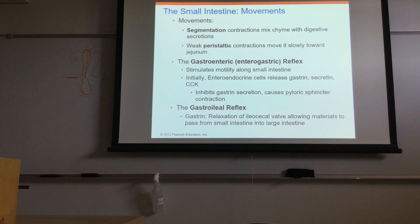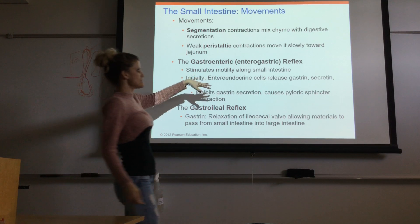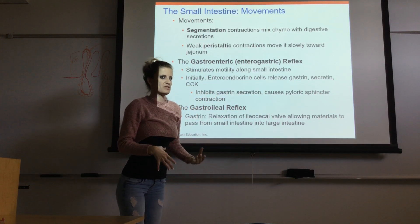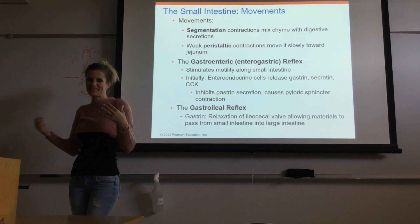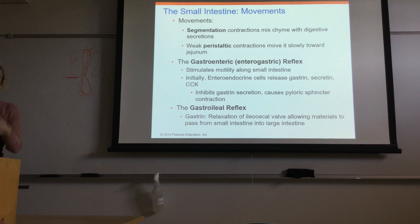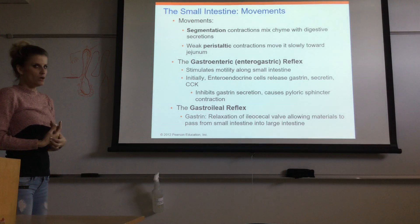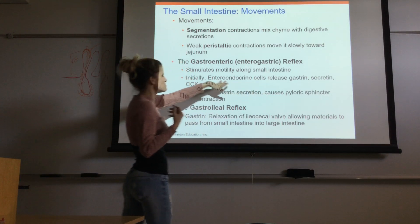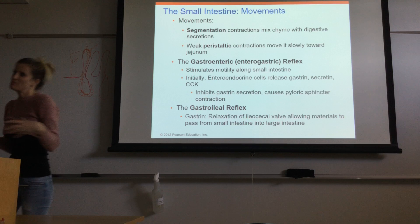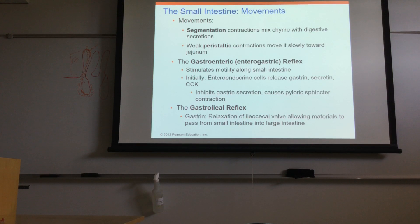Initially, cholecystokinin and secretin stimulate the pancreas and the liver and gallbladder. This is important because when chyme is put into the small intestine, we have to neutralize the acid and start digesting it. So we need secretions from the liver, gallbladder, and pancreas — everything released into that mixing bowl. Gastrin stimulates motility while secretin and CCK stimulate secretions into the duodenum.